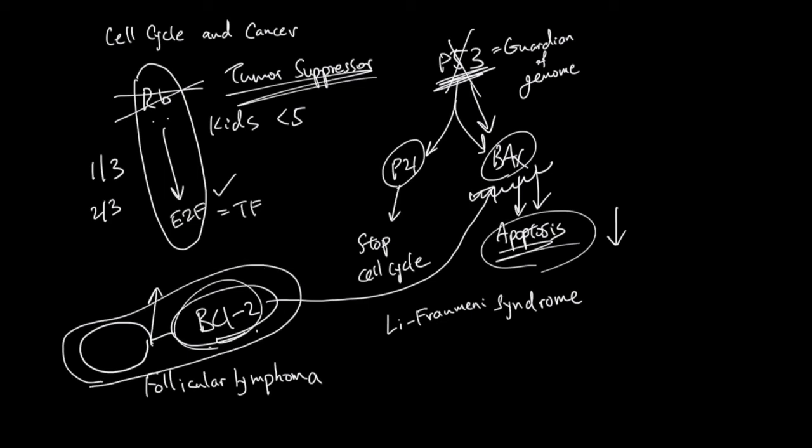This fused gene leads to a lot of B-cell 2 transcription and B-cell 2 translation. Eventually the accumulated B-cell 2 is going to stop all the attempt of apoptosis. On a side note, follicular lymphoma makes up about 20 to 30 percent of non-Hodgkin's lymphomas.